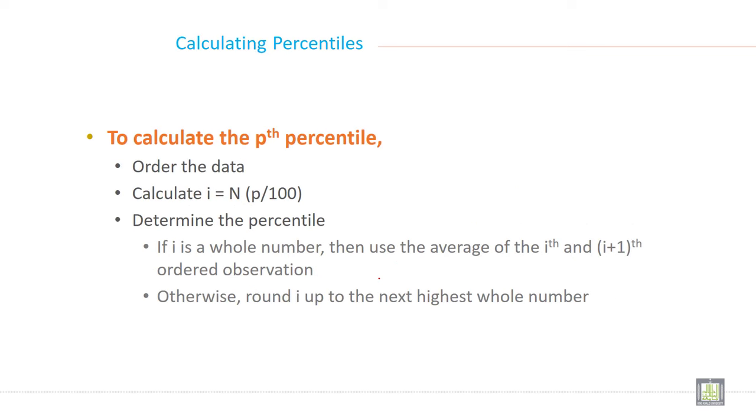What are the procedures to calculate percentile? First, make order like ascending order, then calculate i using the formula i equals n times p by 100, then determine the percentile. When you calculate this you will get either a whole number or decimal number. If i is a whole number then take ith and i plus one position order observation and make it average. Otherwise if it is a decimal number then the next highest whole number will be your answer.